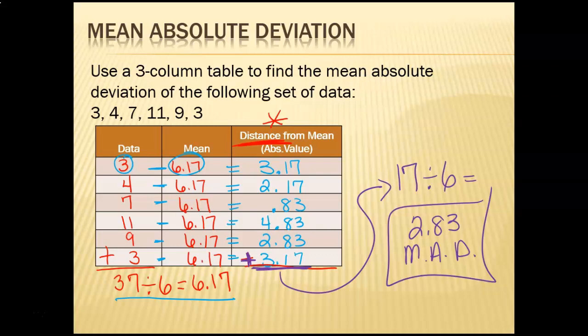Is that a big or small MAD number? It's not super small, but it's not super big, so that means my data is not that far spread out. I go from 3 to 11 in the original data values — a little spread out, but it's about an average mean absolute deviation. To recap: step one, find the mean of the data; step two, subtract to find the distance; step three, find the mean again. Mean, subtract, mean.